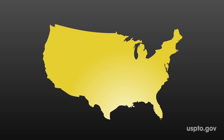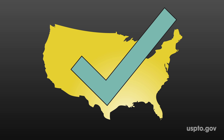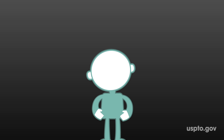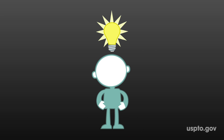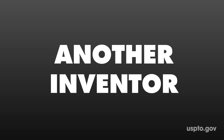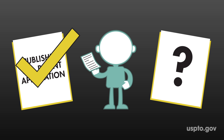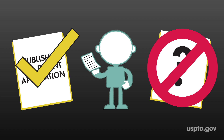Now, the other thing we need to understand is the term "another inventor." Another inventor is an inventor that is listed on one published application or patent but not on the application in question.